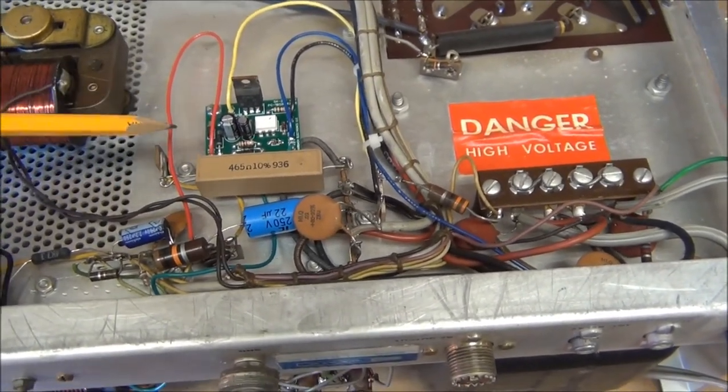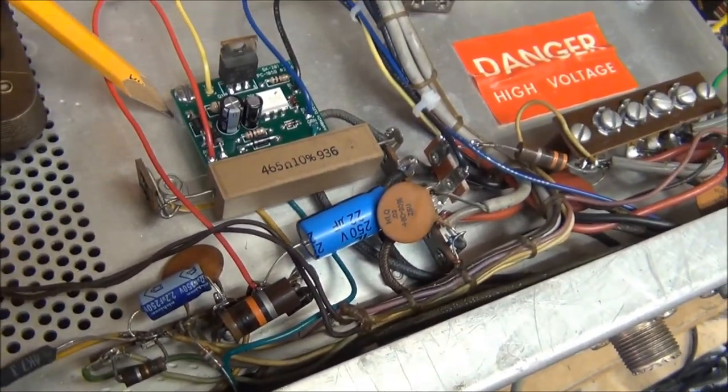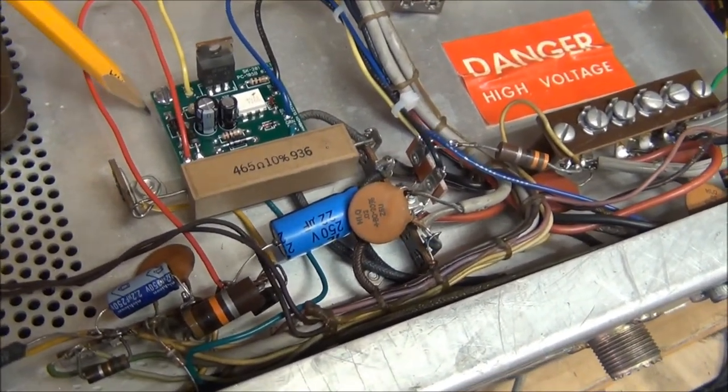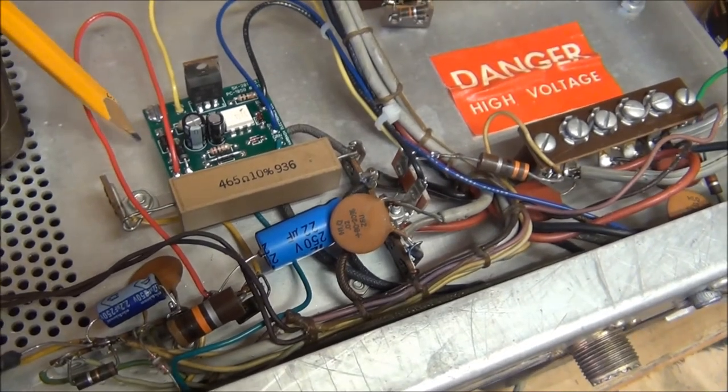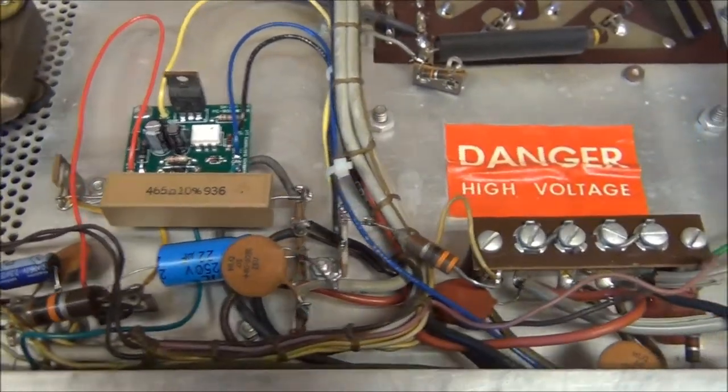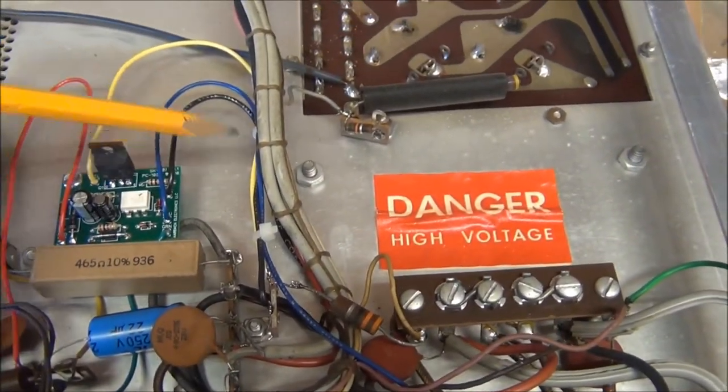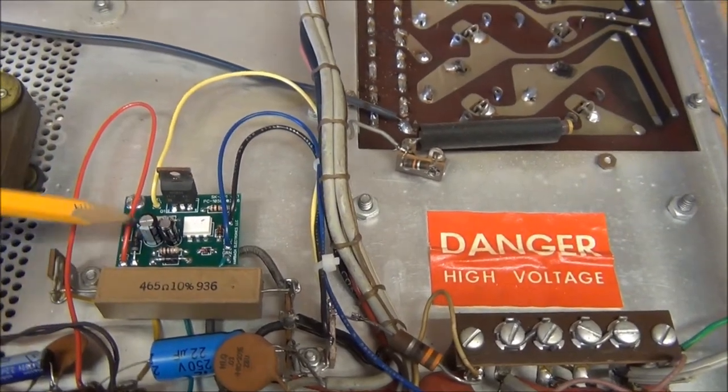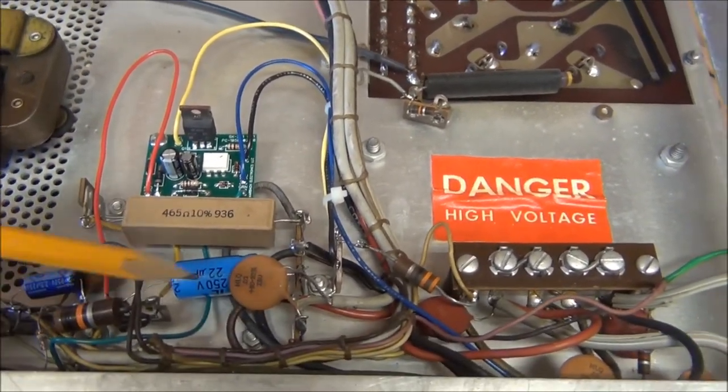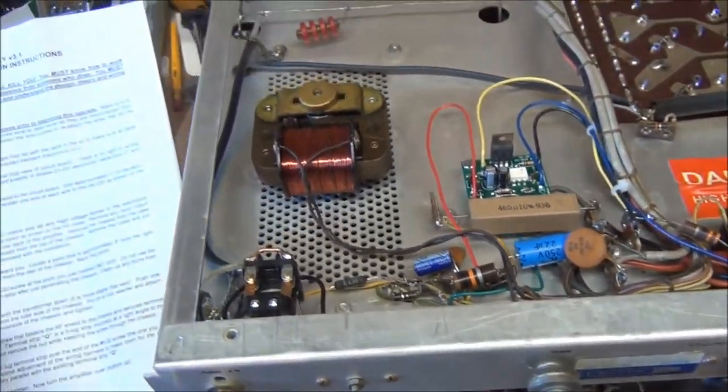He also sends a little standoff to hold it up off the chassis. You have to drill a hole for the screw to go through in the chassis and move a few things around. These wires he sends, you have to tin them and solder them and hook them into the board, then connect them to the right location. But his instructions are very detailed.